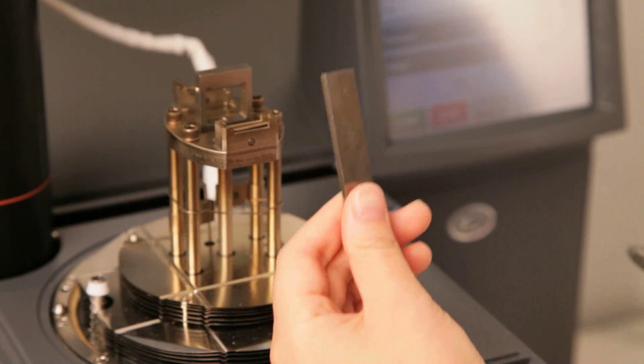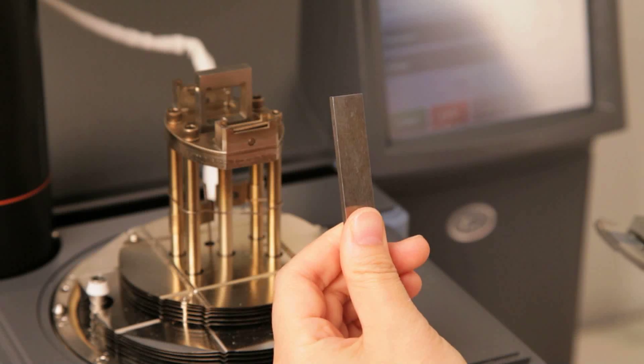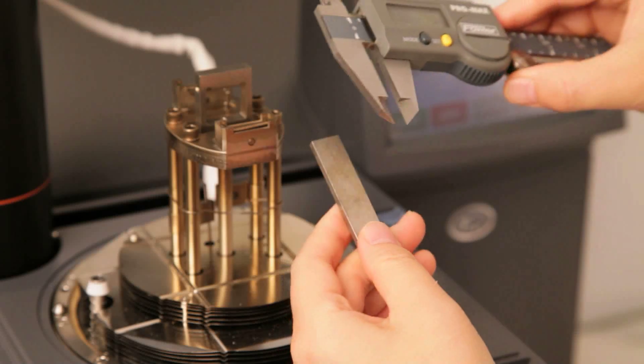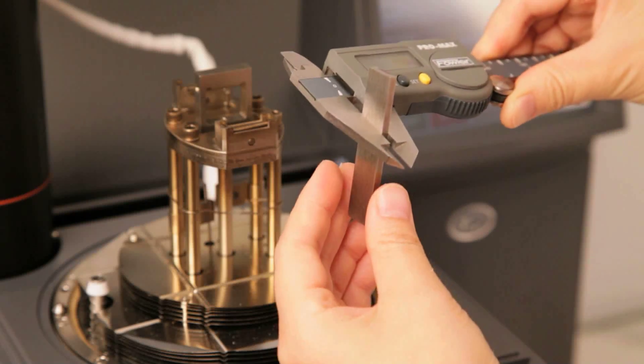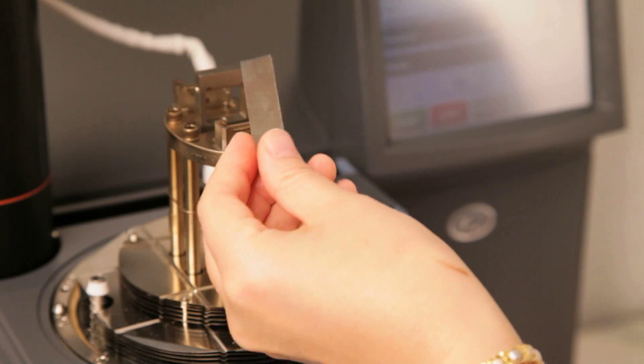For clamp compliance calibration, take the compliance steel bar from the clamp kit. Use a caliper to measure its width and thickness, then load this bar to the clamp.